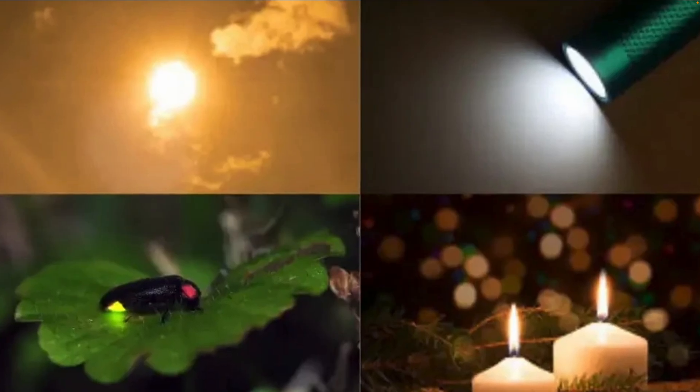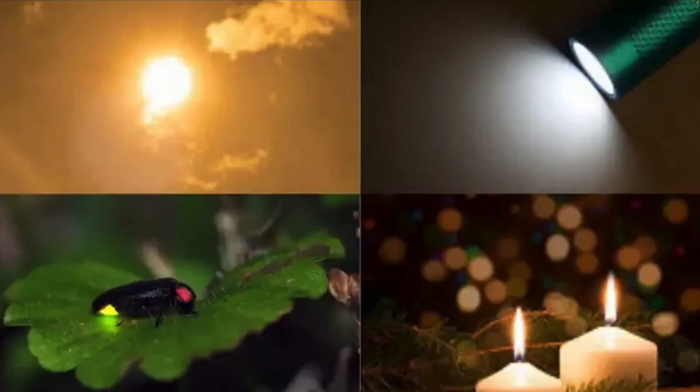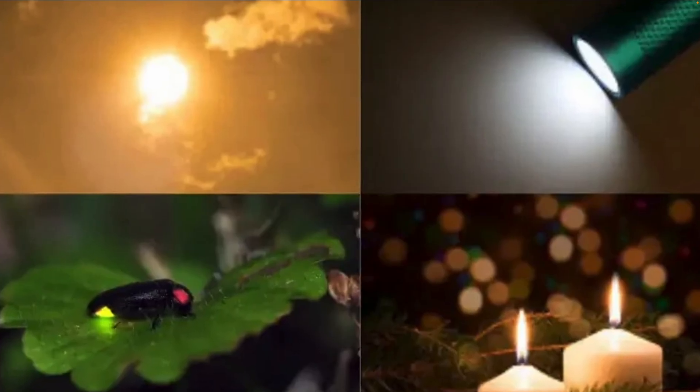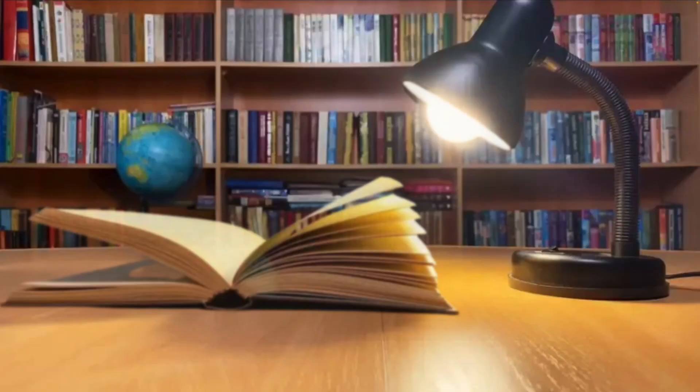But not everything makes its own light. Objects like the moon, a ball, or a book don't shine by themselves. We see them because they reflect light into our eyes. The moon only looks bright because it reflects sunlight, just like how a lamp's light falls on a book so we can read it.